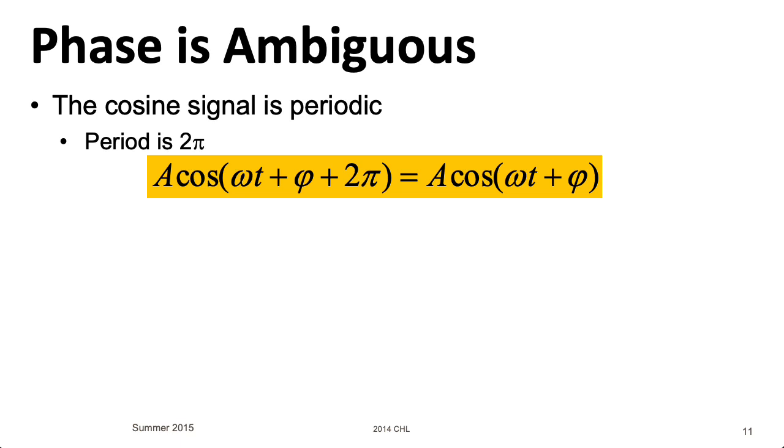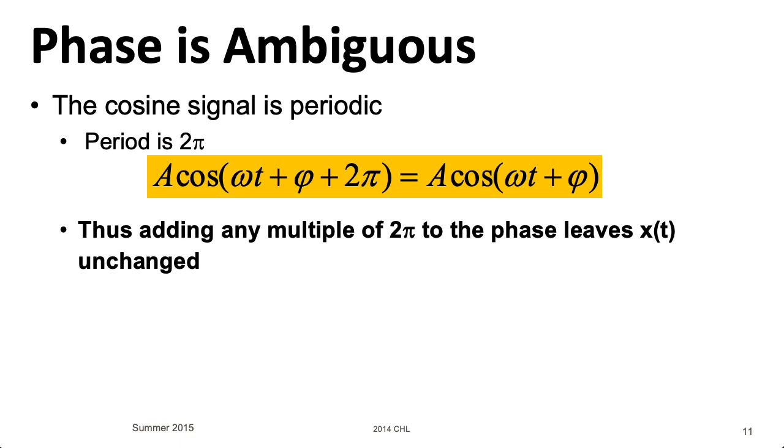But just to emphasize, you can always add or subtract any integer multiple of 2π within the argument of a cosine. So the cosine is periodic with period 2π.